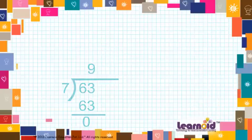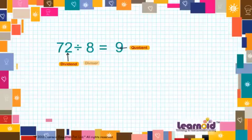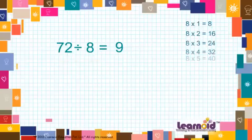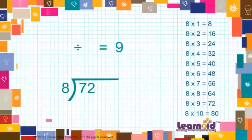Let's see one more example. 72 divided by 8 is equal to 9. We can show this in long division like this.